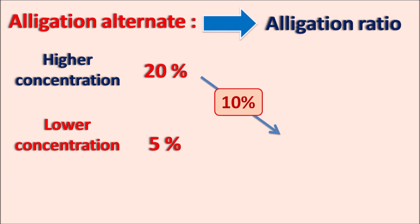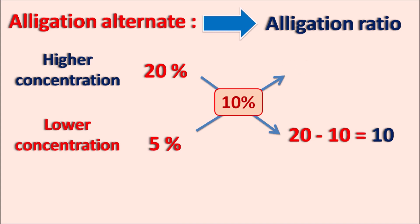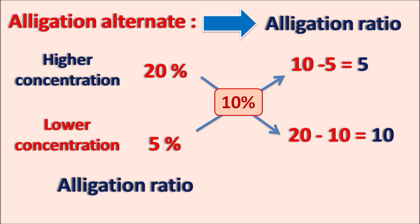We subtract the intermediate from the higher: 20 minus 10 = 10. Then in the upward direction we subtract the lower from the intermediate: 10 minus 5 = 5. So the allegation ratio is 5 : 10, which simplifies to 1 : 2. We mix the higher concentration by one part and the lower concentration by two parts to get the intermediate concentration of 10%.